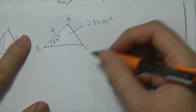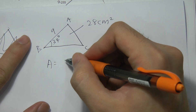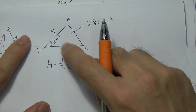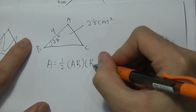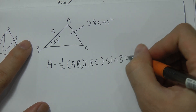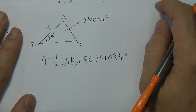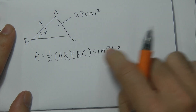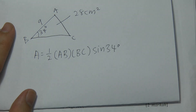In the chapter Solution of Triangle, we have a formula for area. The area equals one-half times two sides multiplied together, times the sine of the angle between them. So it's: Area = ½ × AB × BC × sin(34°). The general formula is ½ × a × b × sin C, where C is the included angle.